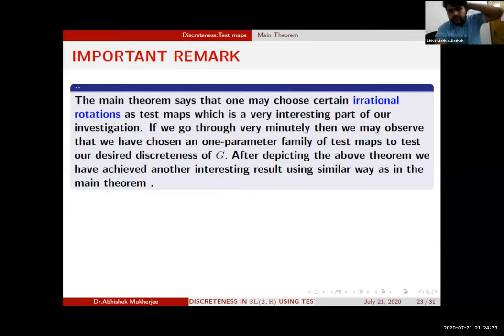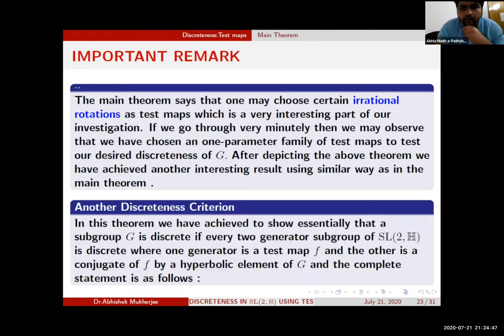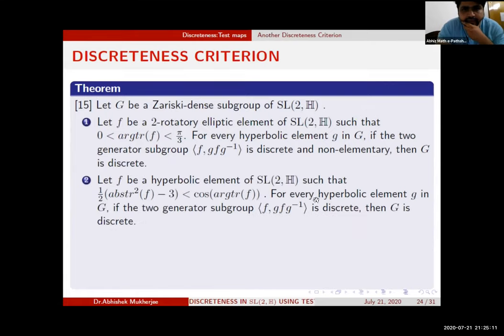This theorem says that one may choose certain irrational rotations as test maps, which is a very interesting part of our investigation. If you go through minutely, you may observe we have chosen a one-parameter family of test maps to test desired discreteness of the whole group G. After having this result, you can also have another one that looks the same, but here we are taking one generator to be a test map f and the other is a conjugate of f by a hyperbolic element of G. These two-generator subgroups we are considering: f, gfg⁻¹.